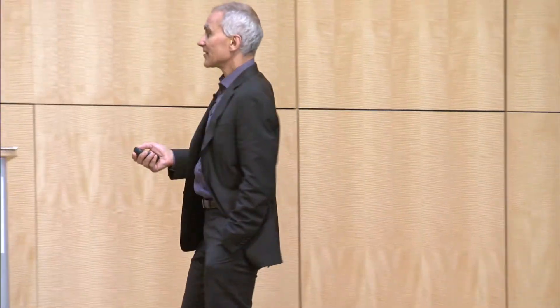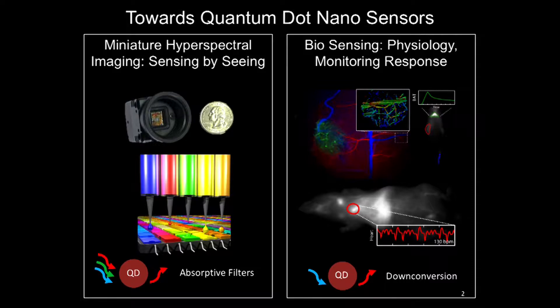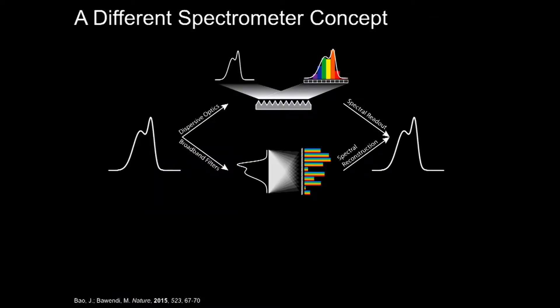What I'm going to talk to you about is not the visible quantum dots that are already commercial, but the absorption properties of quantum dots, and also quantum dots that are in what we call the shortwave infrared — the range between 1 and 2 microns. There are two ways I'm going to talk about using quantum dots. The first is using the fact that quantum dots can absorb essentially in any spectrum — you can tune the absorption spectrum in a continuous way — and how we can use that for creating miniaturized hyperspectral imaging.